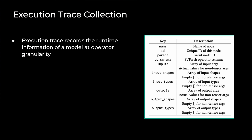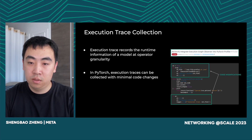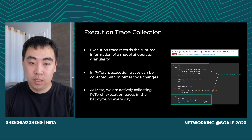Execution trace requires the runtime information of a model, such as execution order, operator schema, input-output arguments, and operator granularity. The red table shows the execution trace node schema, where each node is a PyTorch operator. Each tensor in input-output arguments is tagged with a unique ID, tensor shape, and data type. In the case of PyTorch, the collection of execution traces can be achieved with minimal modifications to existing code. We have made these changes and merged them into the PyTorch mainline — you just need less than 10 lines of code to collect them. At Meta, we are actively collecting execution traces in the background every day.